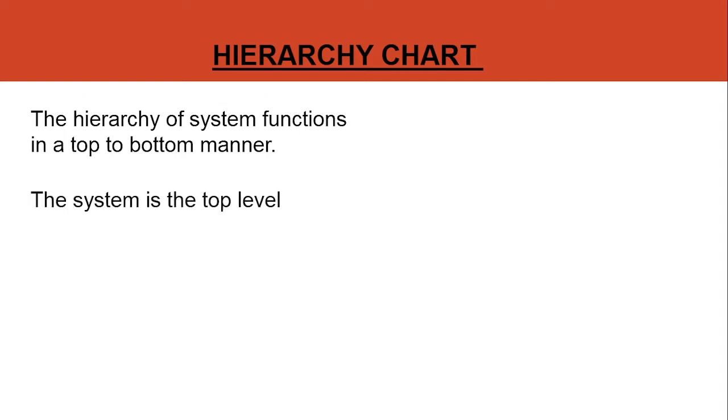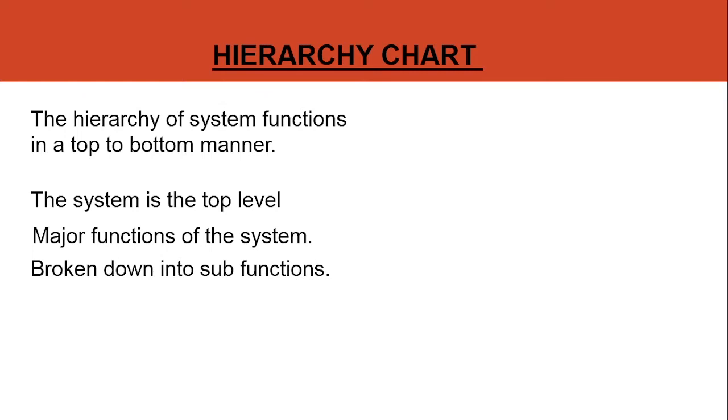So what is a hierarchy chart? The hierarchy chart describes the hierarchy of system functions in a top to bottom manner. It means that the system is the top level. The second level is made up of the major functions of the system. For the third level, each of the major functions is broken down into sub functions.